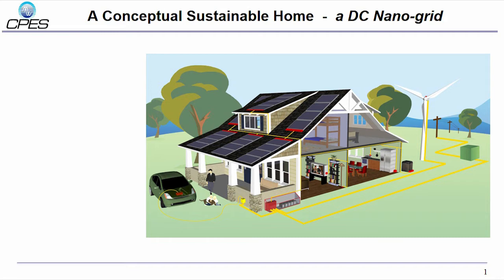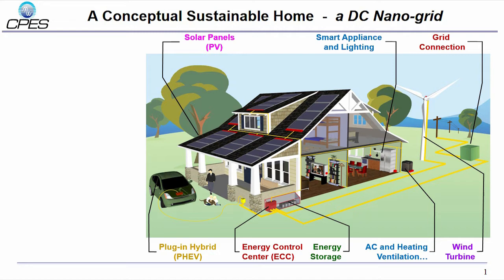A conceptual sustainable future home is shown in this picture with renewable energy sources such as solar panel and wind turbine. There are grid connections through the energy control center, so called ECC converter, interfacing local utility and future DC bus. Energy storage with lithium ion batteries are used as energy buffer. What is more, plug-in hybrid electric vehicles are used as an extension of energy storage through the internal gas engine.